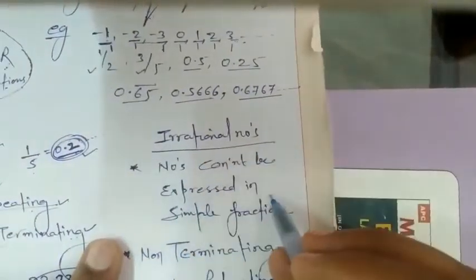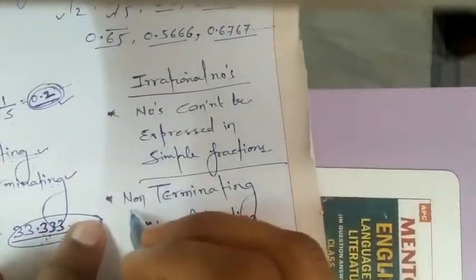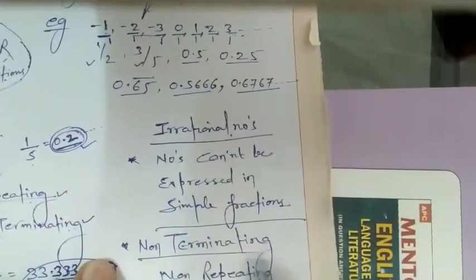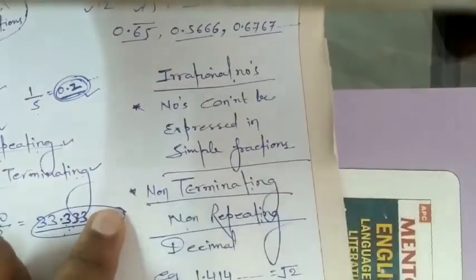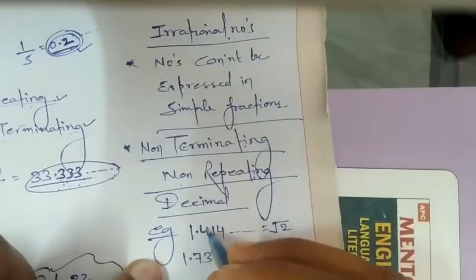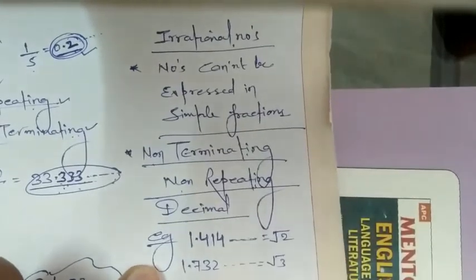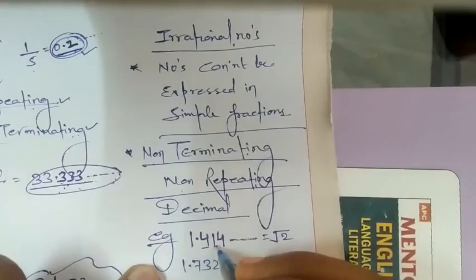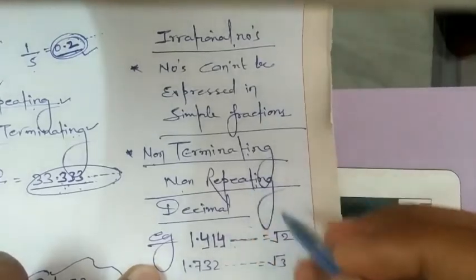Now coming to irrational numbers. Irrational numbers are the numbers that cannot be expressed in simple fractions. Unlike rational numbers, irrational numbers have non-terminating and non-repeating decimal expansion. Take the example 1.414... — it is moving further, not terminating, and no digit is repeating after the decimal. So it is non-terminating and non-repeating, and by definition it is an irrational number.